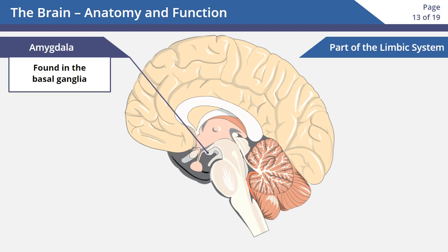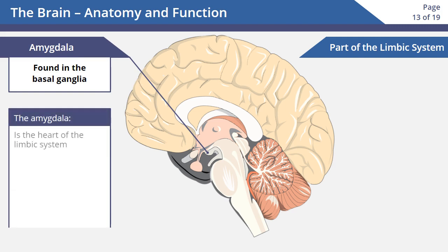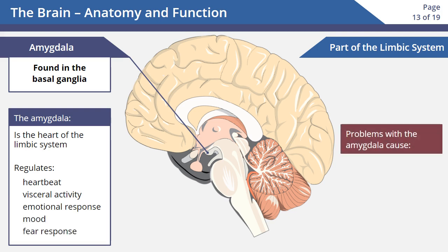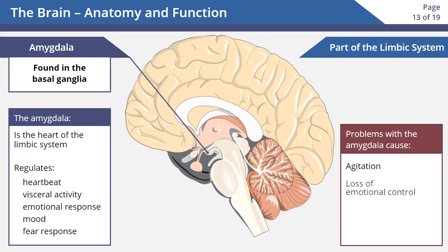The amygdala is found in the basal ganglia, which is deep within the temporal lobe. It's the heart of the limbic system and regulates heartbeat, visceral activity, emotional response, mood, and our fear response. Someone with a problem in this part of the brain would experience agitation and a loss of emotional control.